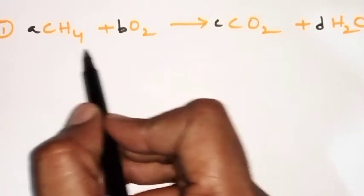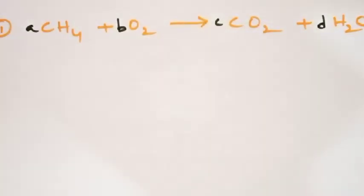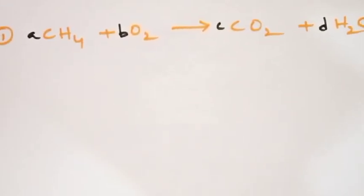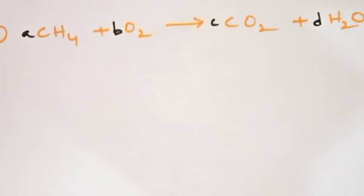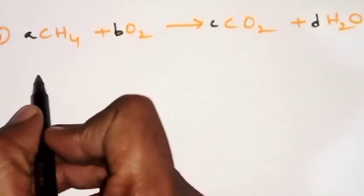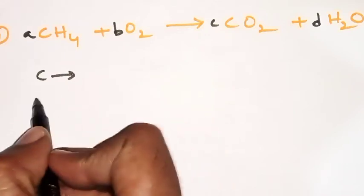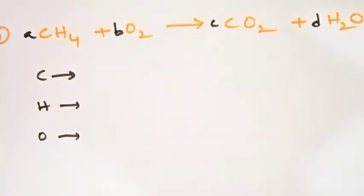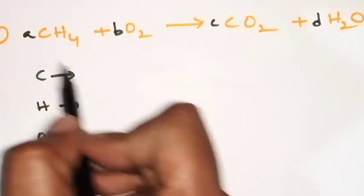So we have 'a' moles of CH₄ and 'b' moles of O₂. Whatever the equation is, just concentrate on the balancing part. In any chemical equation, the left side number of atoms and right side number of atoms must be equal. The types of atoms in this equation are: carbon, hydrogen, and oxygen — three different types only. On the left side, carbon atoms number is 'a'.